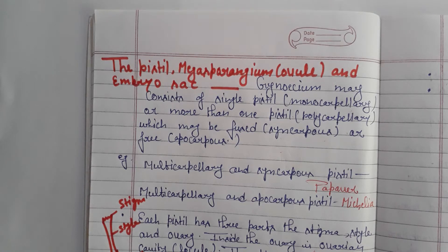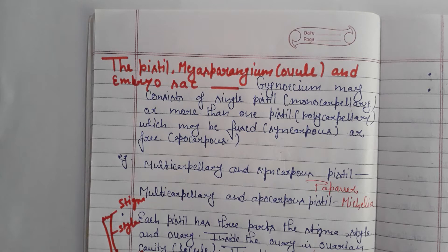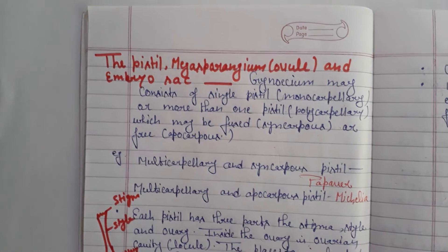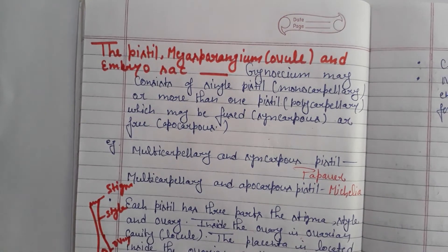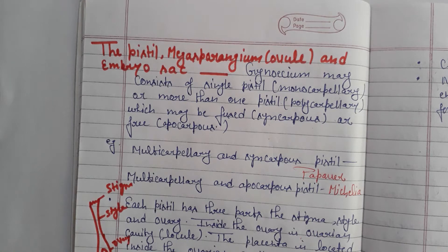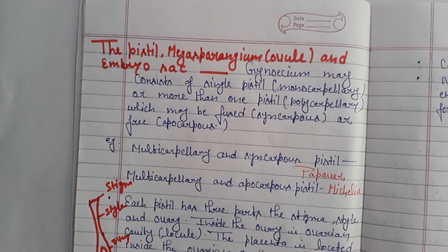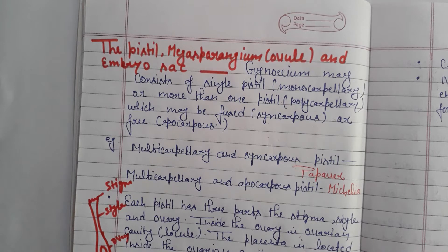In the previous video we studied the pollen grain tetrad and male gamete — the formation of the male gamete. Now, the pistil is called the megasporangium, also called carpel, and within that is the formation of the embryo.